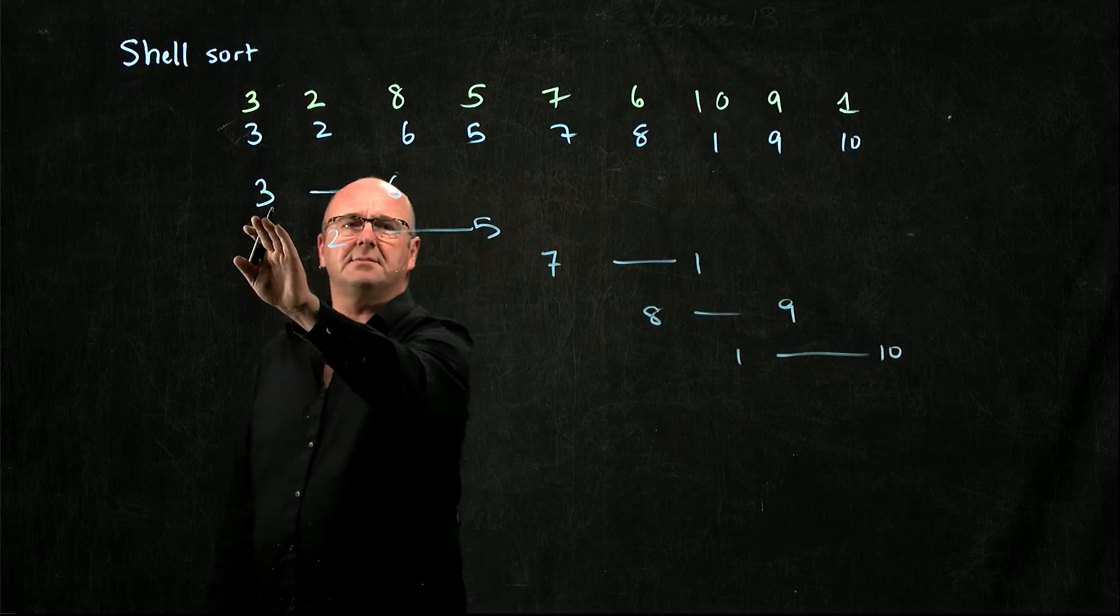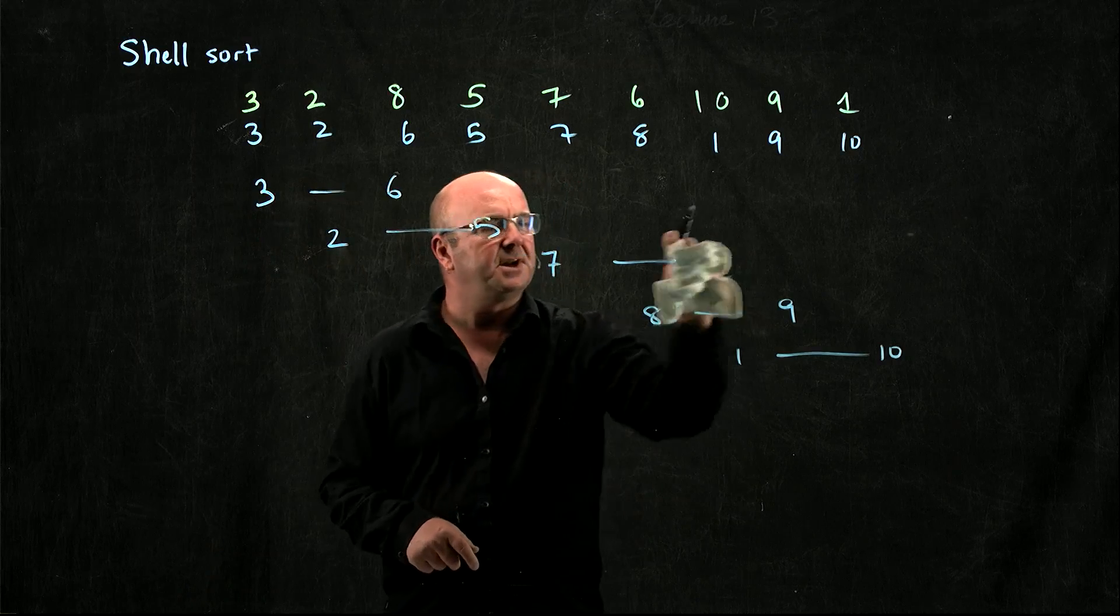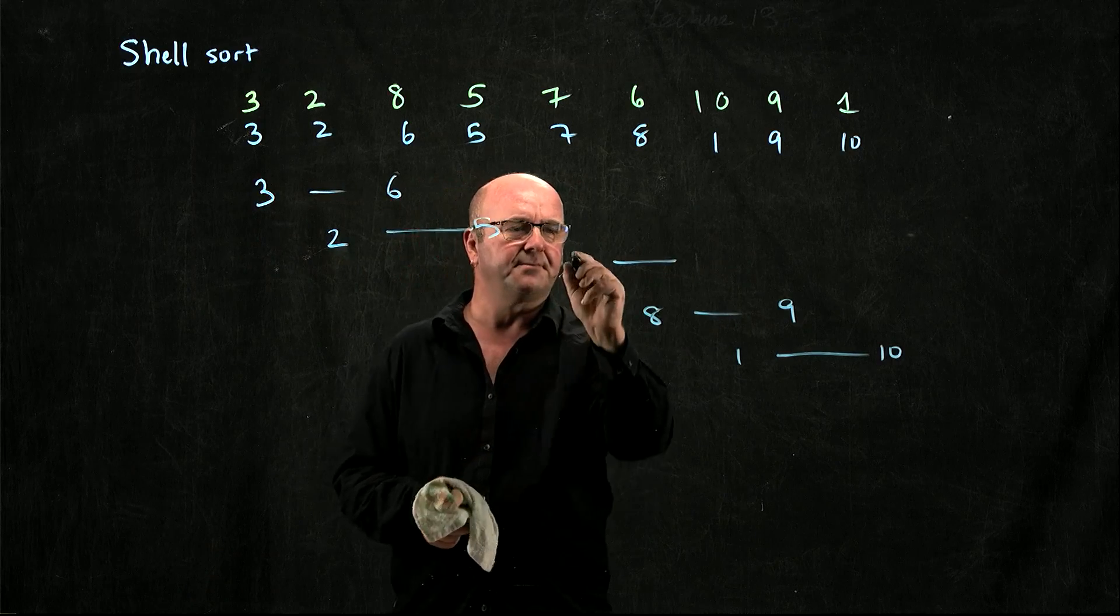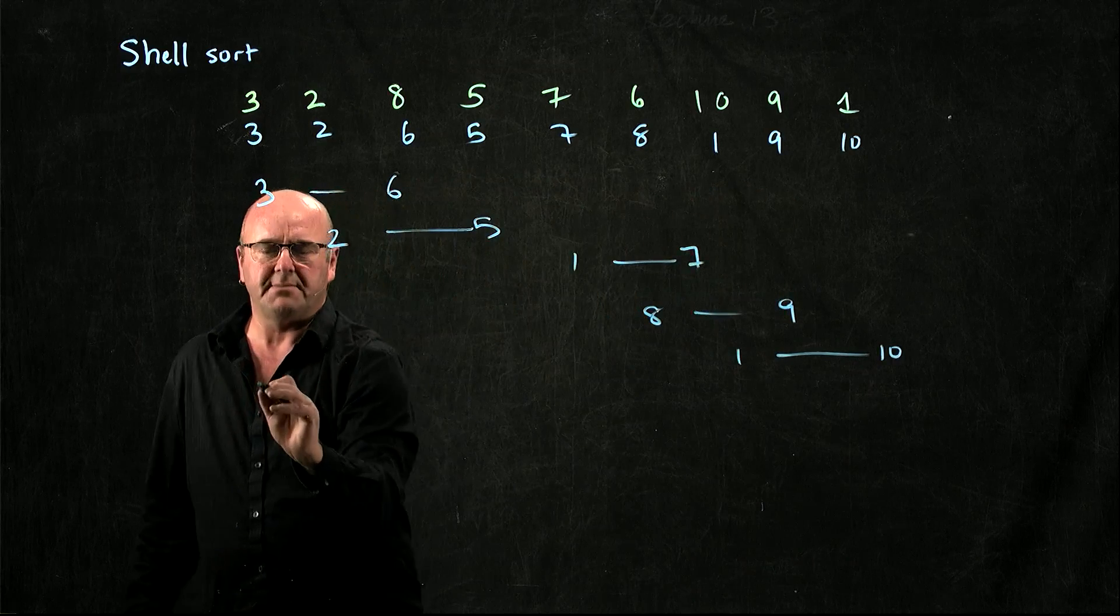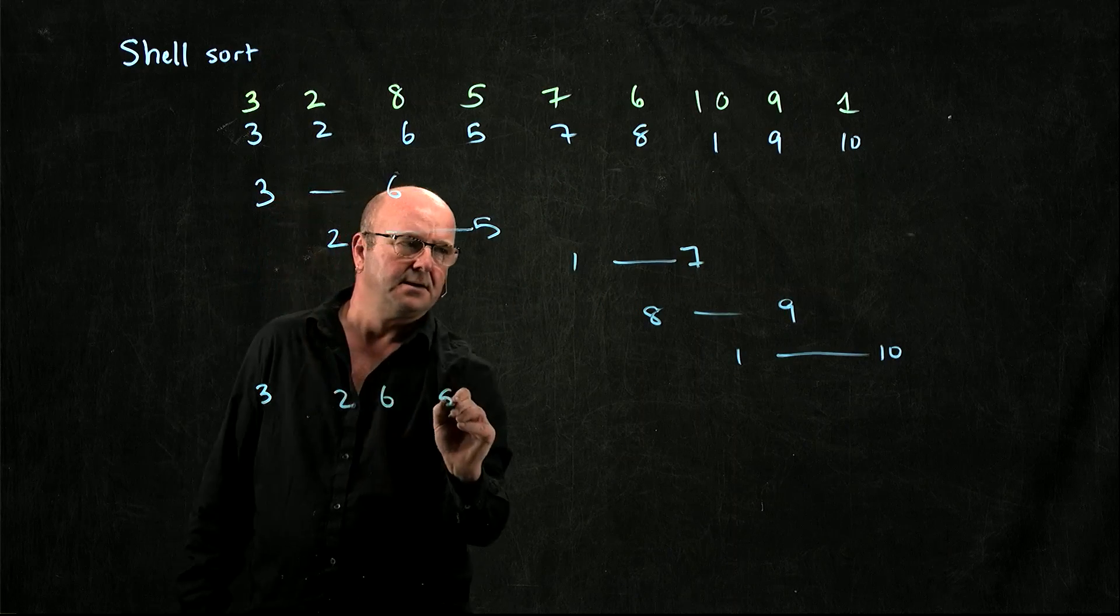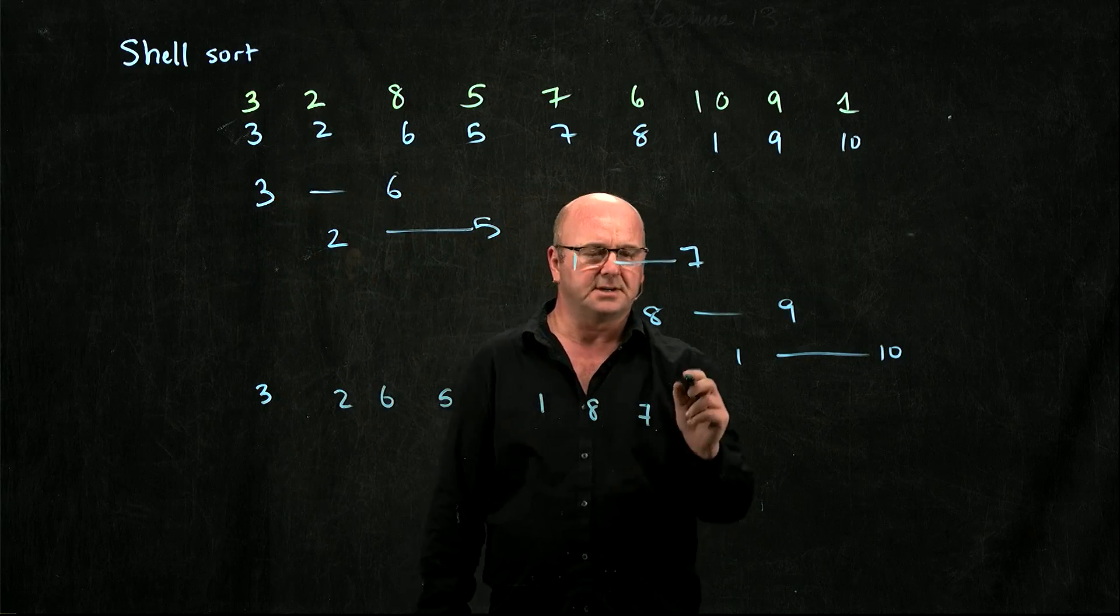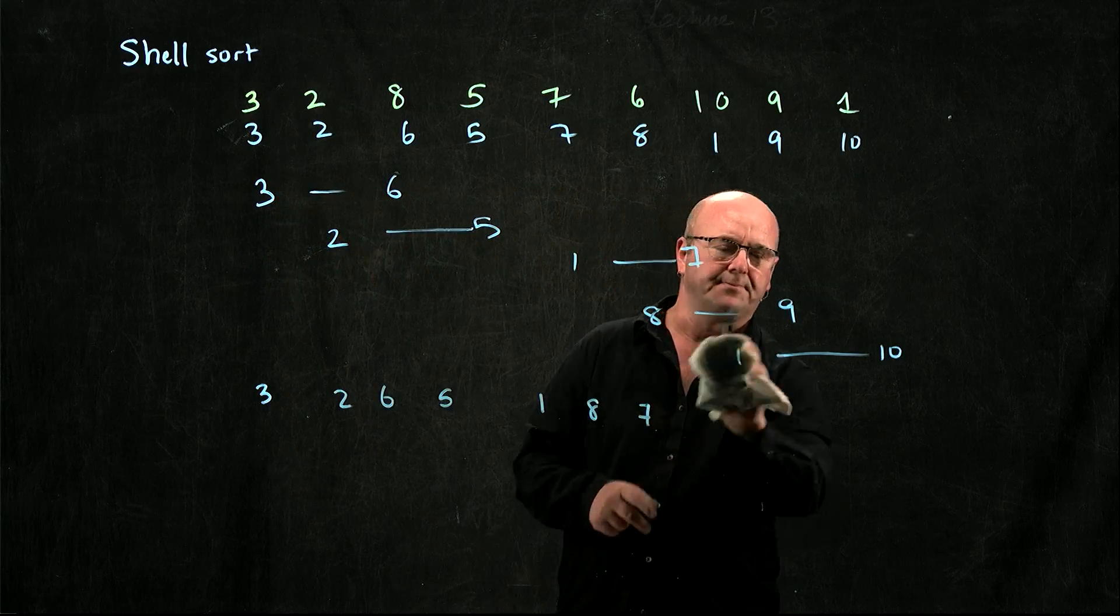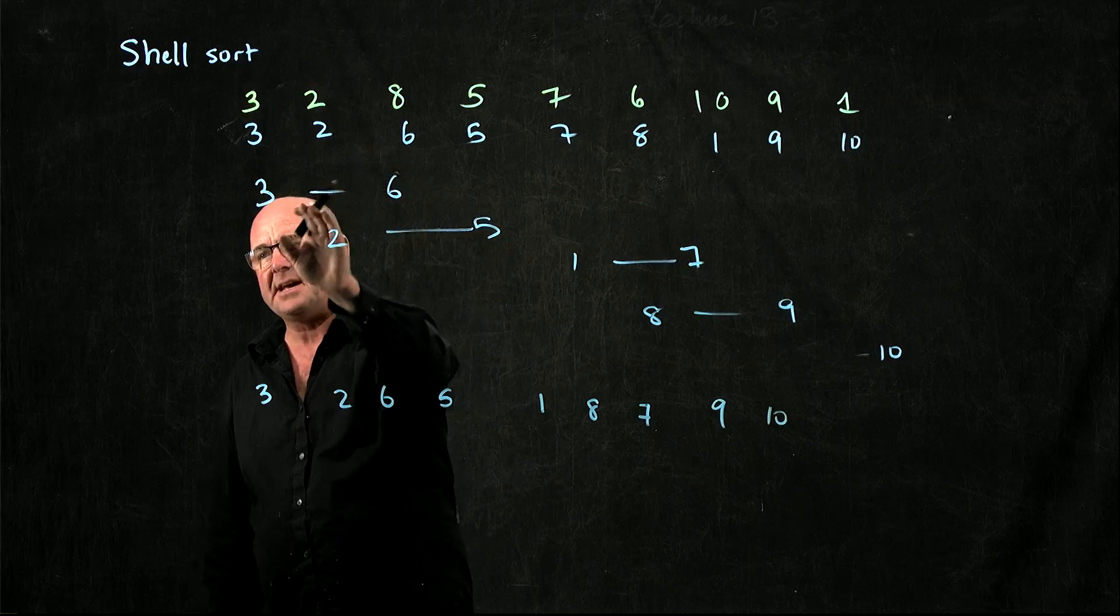And now do I have to sort them? The 3 and the 6 are fine. The 2 and the 5 is fine. I'll swap the 1 and the 7. I'll leave the others. And so now when I put them back together, somehow I've got two number 1s. And now I'll do a half my gap size again.